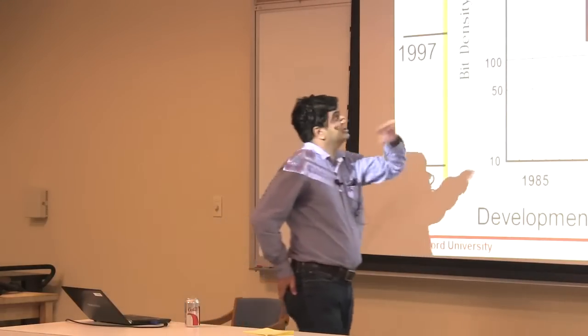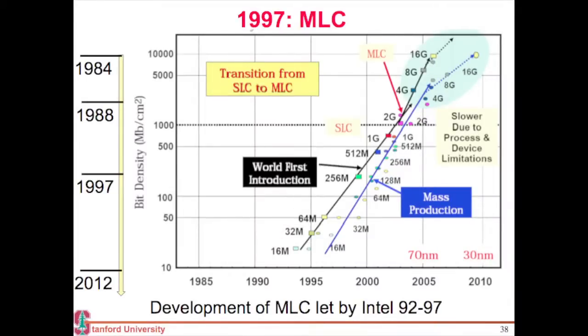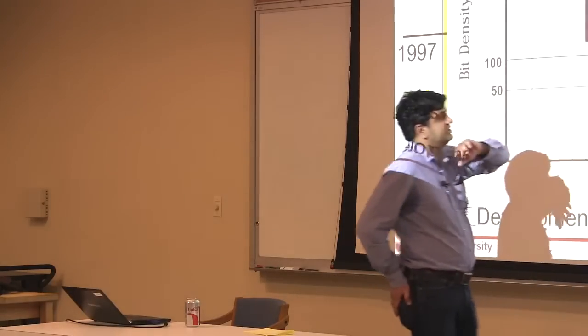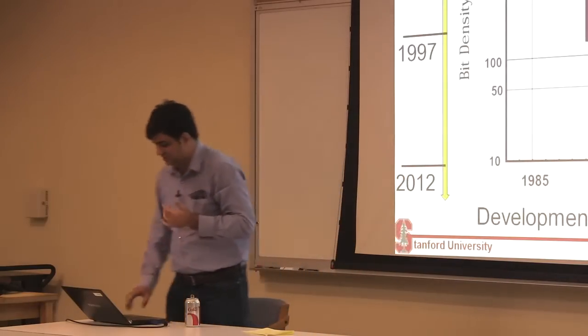The next thing which happened was in 1997, people realized we have this cell, why not start storing more bits into it? So multi-level cell was really invented, not really invented but came into production in 1997, and most of these cells that you see in your iPads and iPhones are multi-level cells.